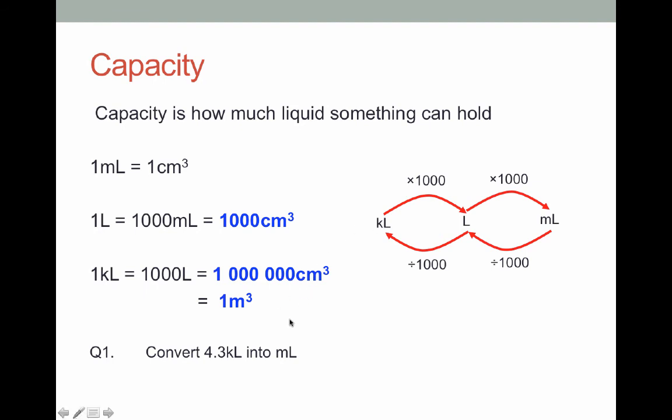I'm going to be changing 4.3 kiloliters not into liters but into milliliters. So I need to multiply by a thousand and then multiply by a thousand again. Basically I could multiply by a million and it would give me my answer in one go.